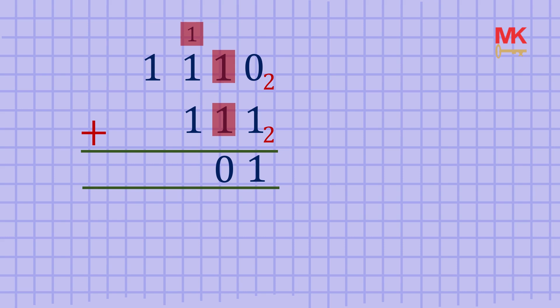Now, one plus one plus one is three. Repeat the same process. Divide this sum by the base to get one remainder one. We put down the remainder again and carry the quotient to the next addition.